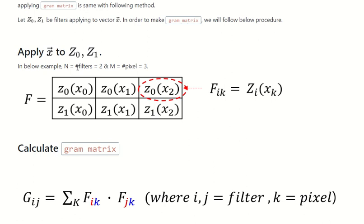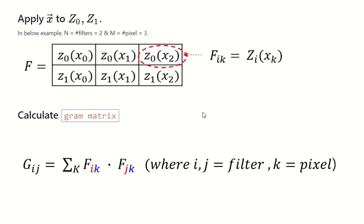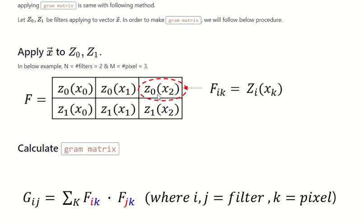N is the number of filters, which is 2 (Z0 and Z1), and M is the number of pixels, which is 3 (elements x0, x1, and x2). In general, we call these elements F.